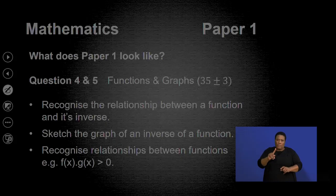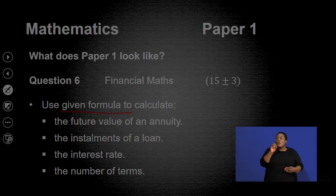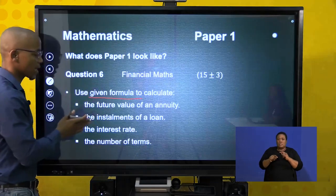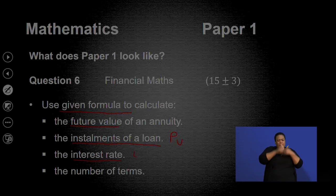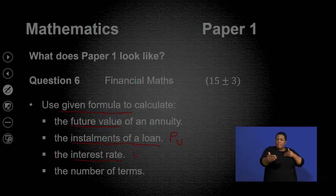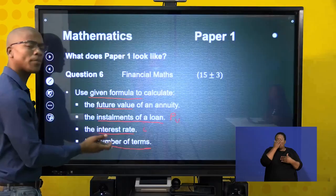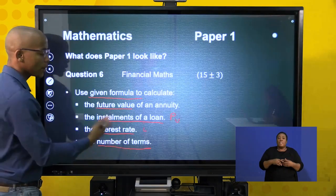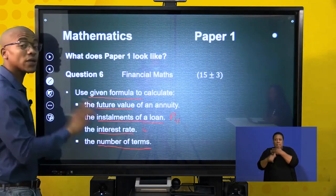Question 6 is financial maths, which is 15 plus or minus 3 marks. Financial maths is all about formulas and the language they use. The formula involves the future value of an annuity and the installment of a loan — present value for loans. You need to find your interest rate and take into consideration the compounding period and the number of terms. Annuities are normally monthly; compound interest can be per annum, monthly, or compounded quarterly. For depreciation questions, it's always per annum.